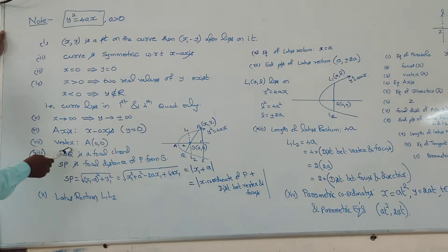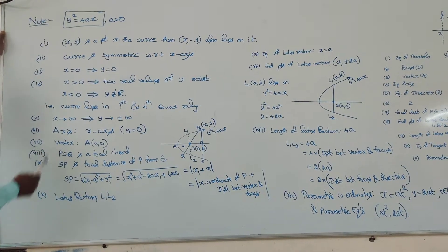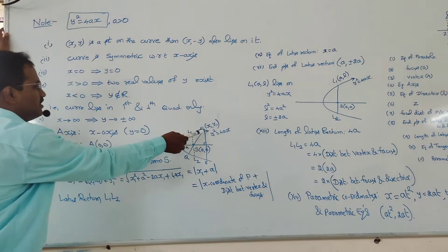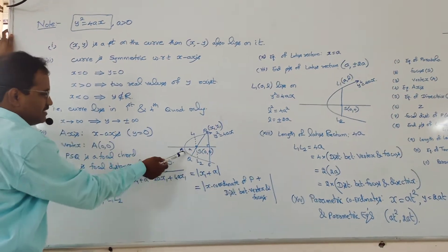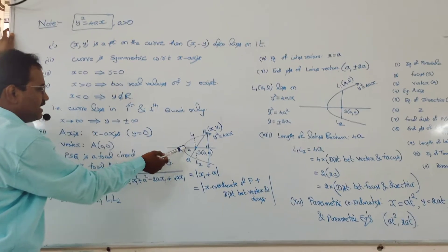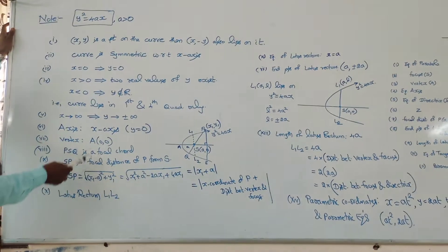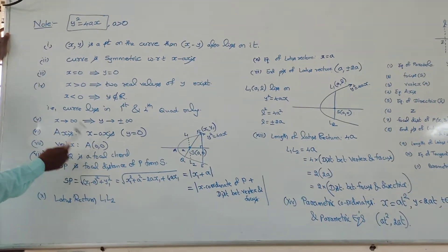Next, the vertex. The point of intersection of the curve with the axis is the vertex. That means the vertex is (0, 0).